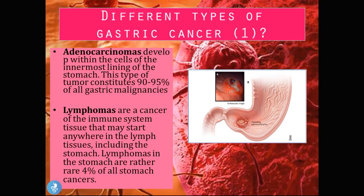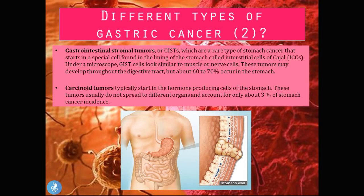Lymphomas are cancers of the immune system tissue that may start in the lymph tissues found within the stomach. They are rare and account for about 4% of all stomach cancers. Gastrointestinal stromal tumors (GISTs) are a rare type starting from the interstitial cells of Cajal; under a microscope they look similar to muscle or nerve cells, and 60 to 70% occur in the stomach. Carcinoid tumors start in the hormone-producing cells of the stomach, do not usually spread to other organs, and account for only about 3% of gastric cancers.